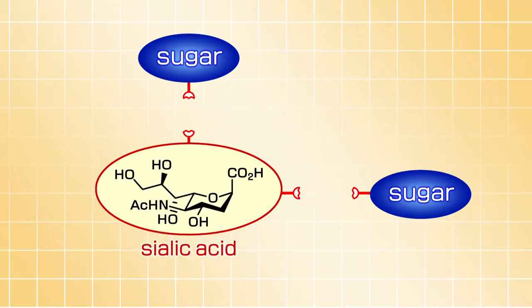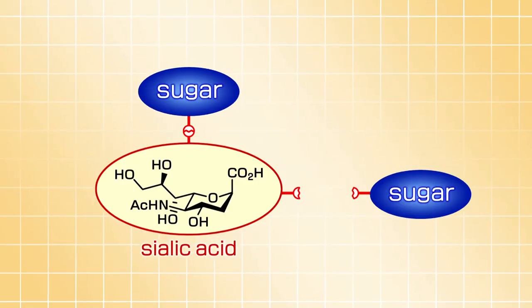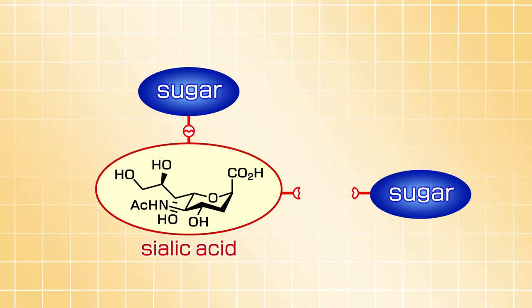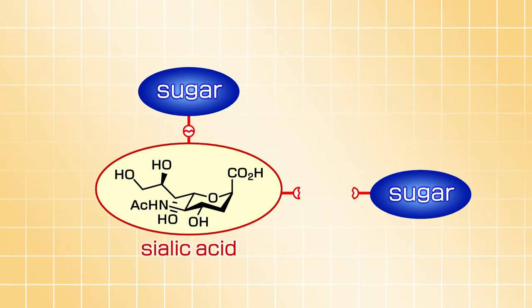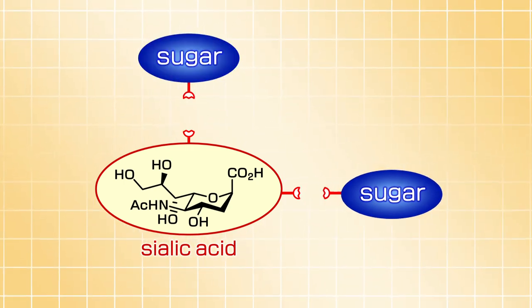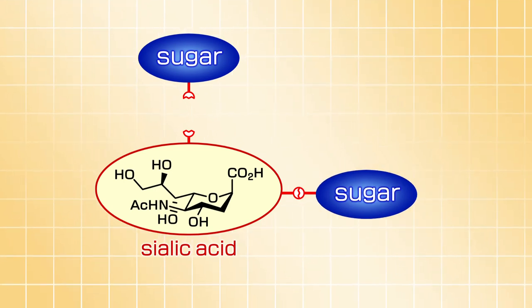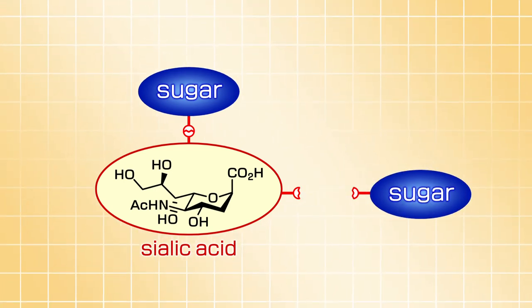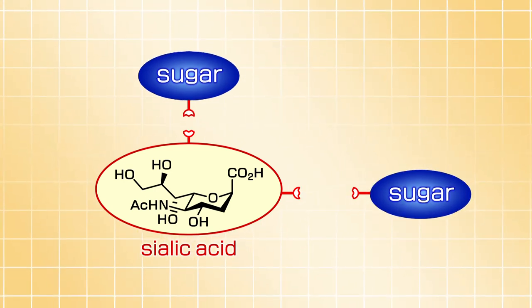To address this problem, we envisioned manipulating the sialic acid molecules to ensure that only horizontal bonding was possible. Sialic acid can form a new chemical bond to either the vertical or horizontal direction; therefore, the selective formation of alpha-glycosidic bonds is difficult.